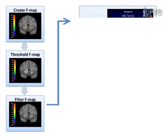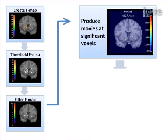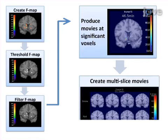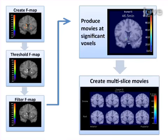The final step is to color-code the fractional dopamine level at each voxel over time in significant voxels, and capture the color-coded values as a series of dynamic images.